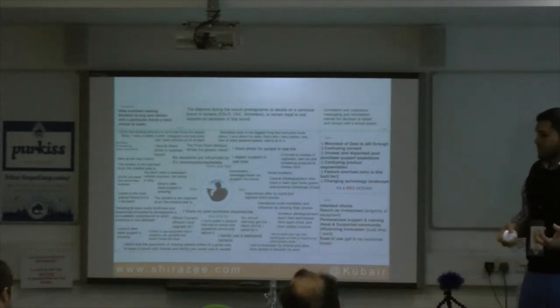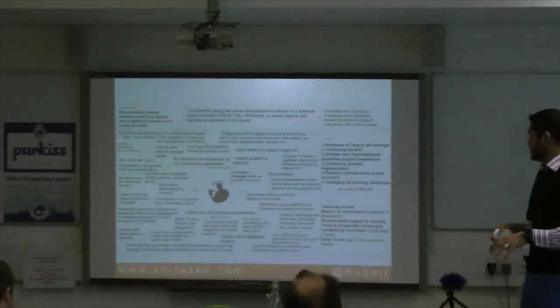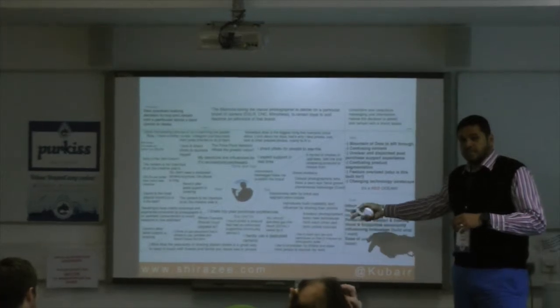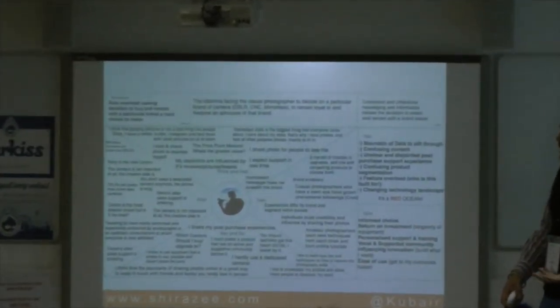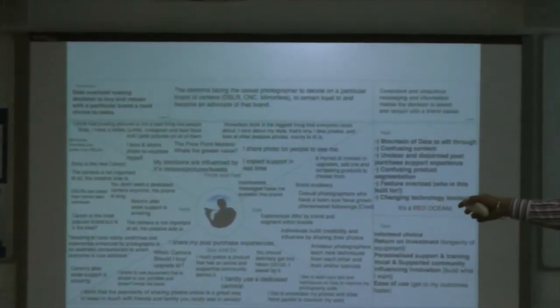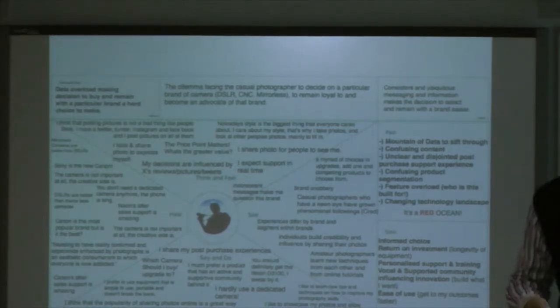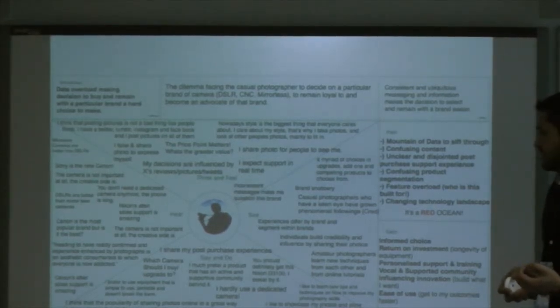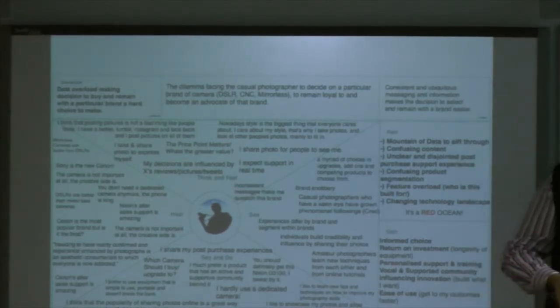The relief would be informed choice and consistent messaging. We've got things like personalized training — these are things we discovered after looking at their pains and behavior. What they hear — the noise — is that 'Sony is the new Canon.' Canon is the most popular brand, but is it the best? The brand messaging isn't consistent, making people question the strength of the brand itself. 'Camera is not important — the creative side is.' That's another thing we heard in research. And 'Canon's after-sale support is amazing.' In terms of how we did this research, we actually went out and spoke to people — professional photographers, and individuals quite literally on the street outside a camera shop.